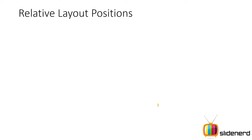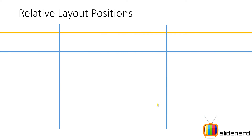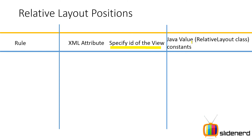So let us look at some attributes that define the relationship between two views. Here you have your rule, your XML attribute. Now this XML attribute does not take true or false — instead you give it the ID of the view. And if you're creating a relative layout using Java code, these are the constants inside the RelativeLayout class that you should be using to create the same effect in terms of appearance.